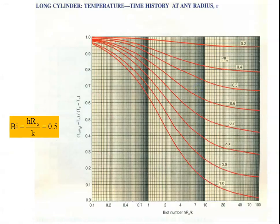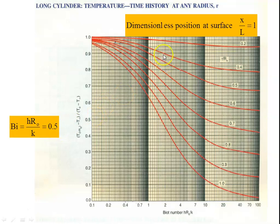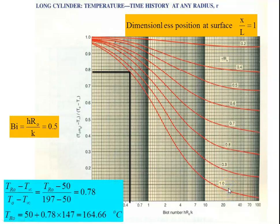To calculate the surface temperature, refer to the second Heisler chart (temperature–time history at radius R). With Biot number 0.5 and r/R₀ = 1 (outer surface), the ratio (T_R₀ − T∞)/(T₀ − T∞) = 0.78. Therefore: T_R₀ − 50 = 0.78 × (197 − 50) = 0.78 × 147, giving T_R₀ = 50 + 114.66 = 164.66°C.